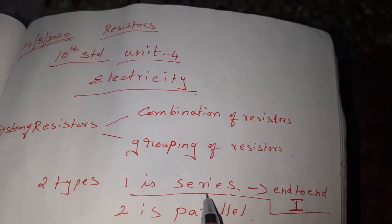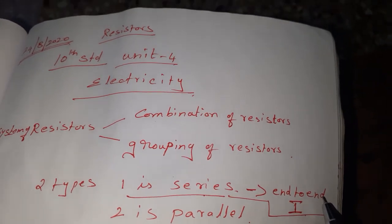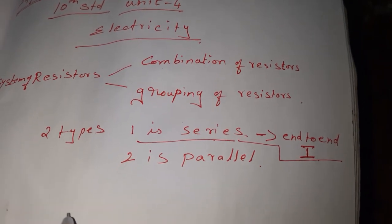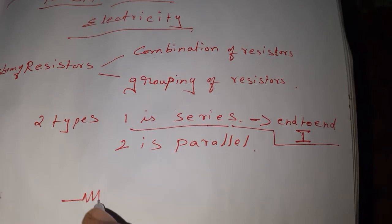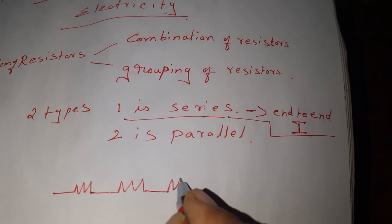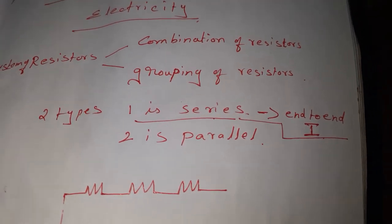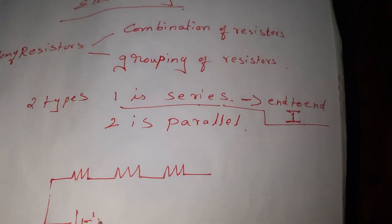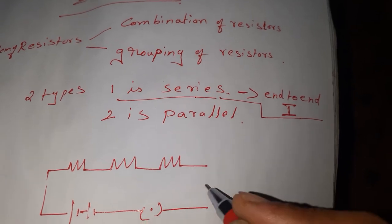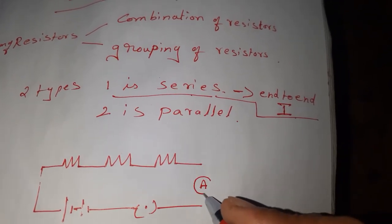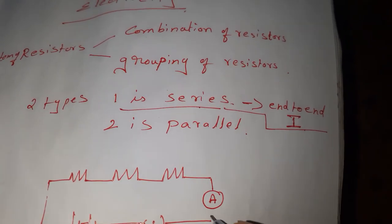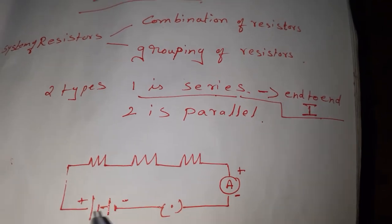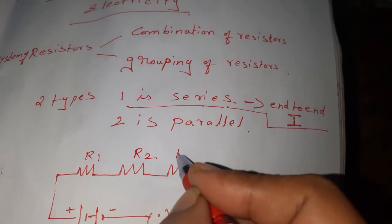Now I am going to explain the series connection. Resistors are connected in an end-to-end connection and the current passing through each of them is the same. Let us see the circuit for that: one resistance, then the end of that resistance is connected to another resistance, then a third resistance. This is connected with a battery — the symbol of a battery is a long line and a short line — and connected through a key. The current is measured using an ammeter. This is the positive and this is the negative terminal. So this is resistance 1, resistance 2, resistance 3.